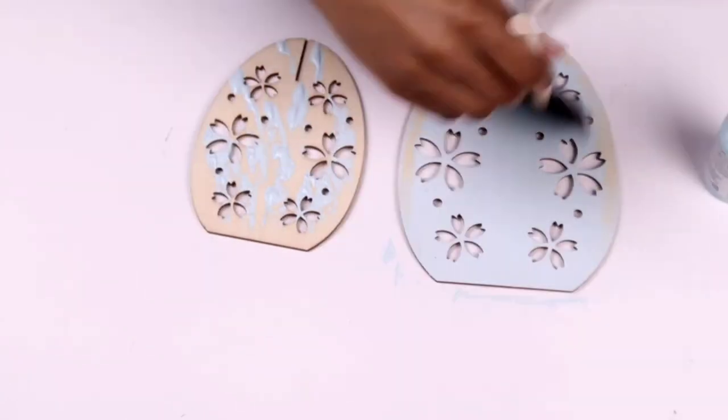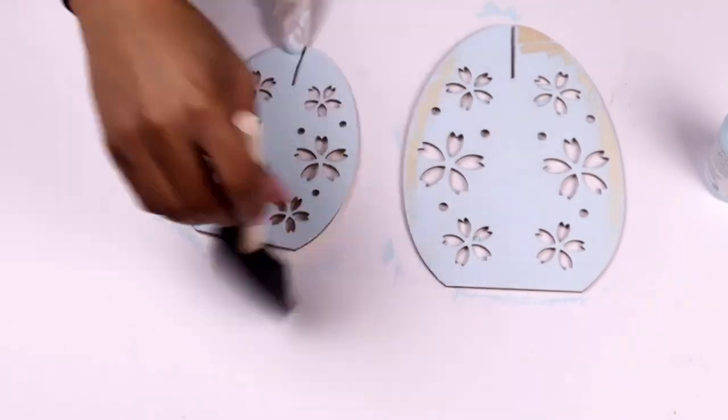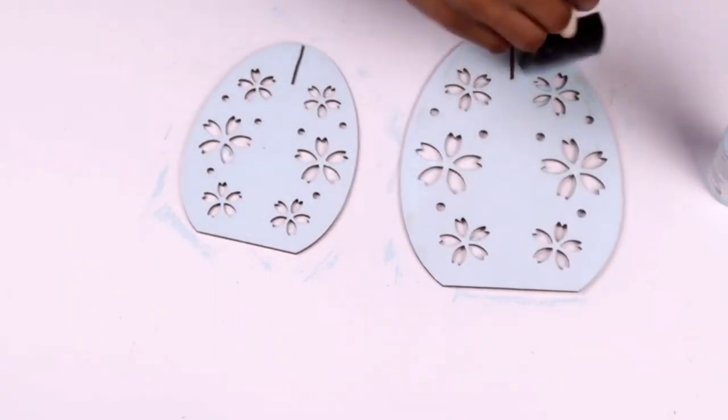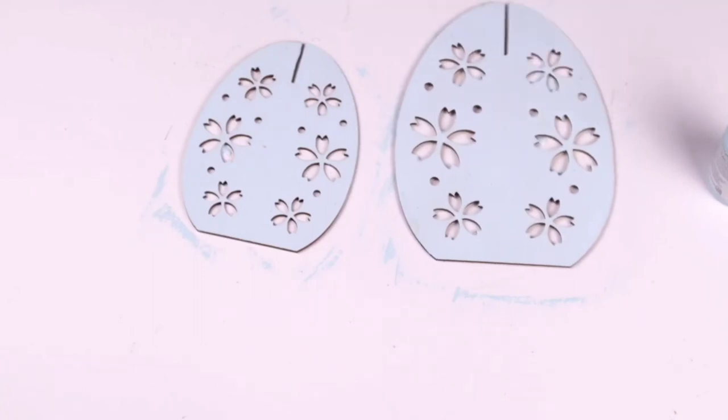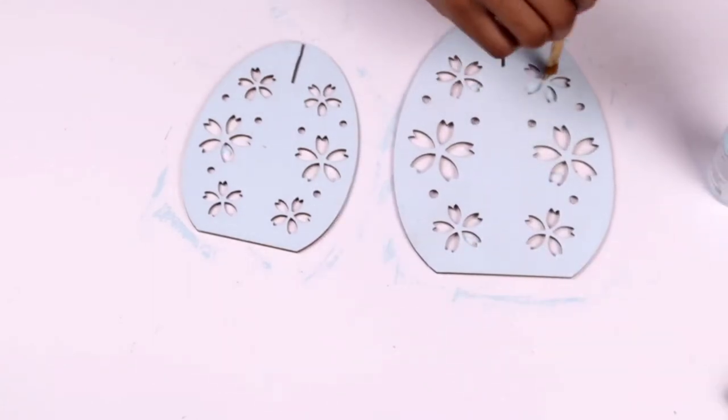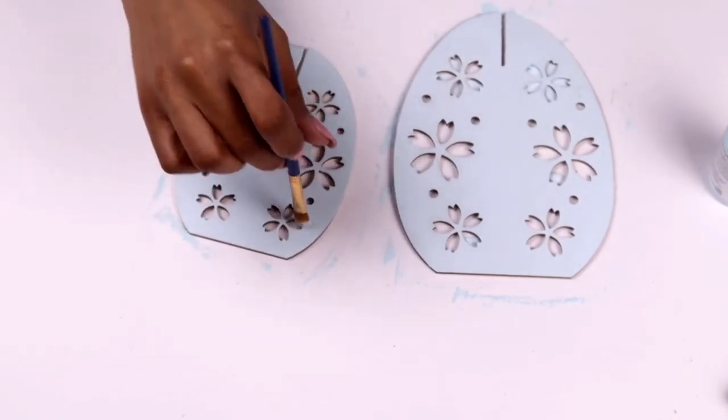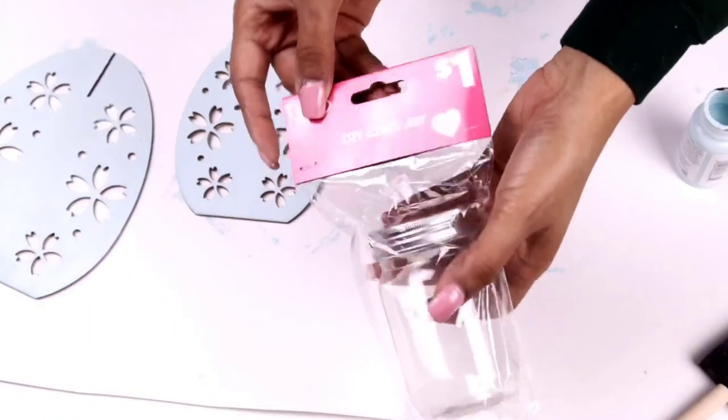Here I'm just painting on that chalk paint. This is also the Waverly brand as well with an old foam brush that I had, it's clean but it's old. Then I just kind of go in with another paintbrush where some of the paint kind of seeped through because I didn't want it to kind of clump up.